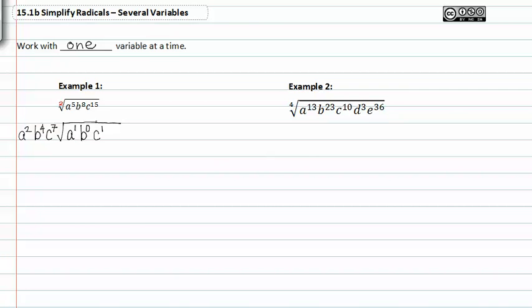Two will go into fifteen seven times with a remainder of one. It's important to remember that anything to the first power is simply written as itself and understood to be to the first power. b to the zero is the same as one. So anything times one is just itself so we don't have to keep b in there since it's just one.